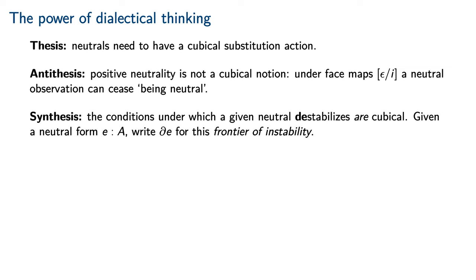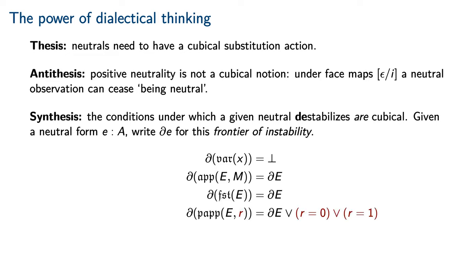However, we notice that the conditions under which a given neutral destabilizes are cubical. In particular, we may identify for any neutral form e a frontier of instability or a condition under which it destabilizes. Variables are completely stable, hence the frontier of instability is empty. Ordinary elimination forms like application and first projection simply preserve the frontier of instability of their neutral arguments.